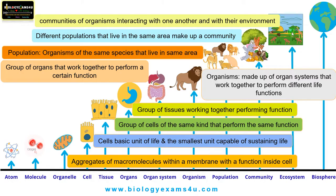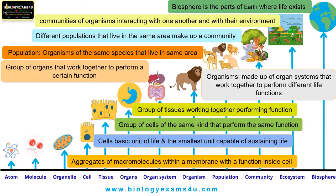Ecosystems include grasslands, desert, tundra, taiga, etc. And finally, these ecosystems combine together to form the biosphere — the part of Earth where life exists — made up of biomes, a combination of all ecosystems on this planet that are inhabited by living things including plants, animals, bacteria, etc.